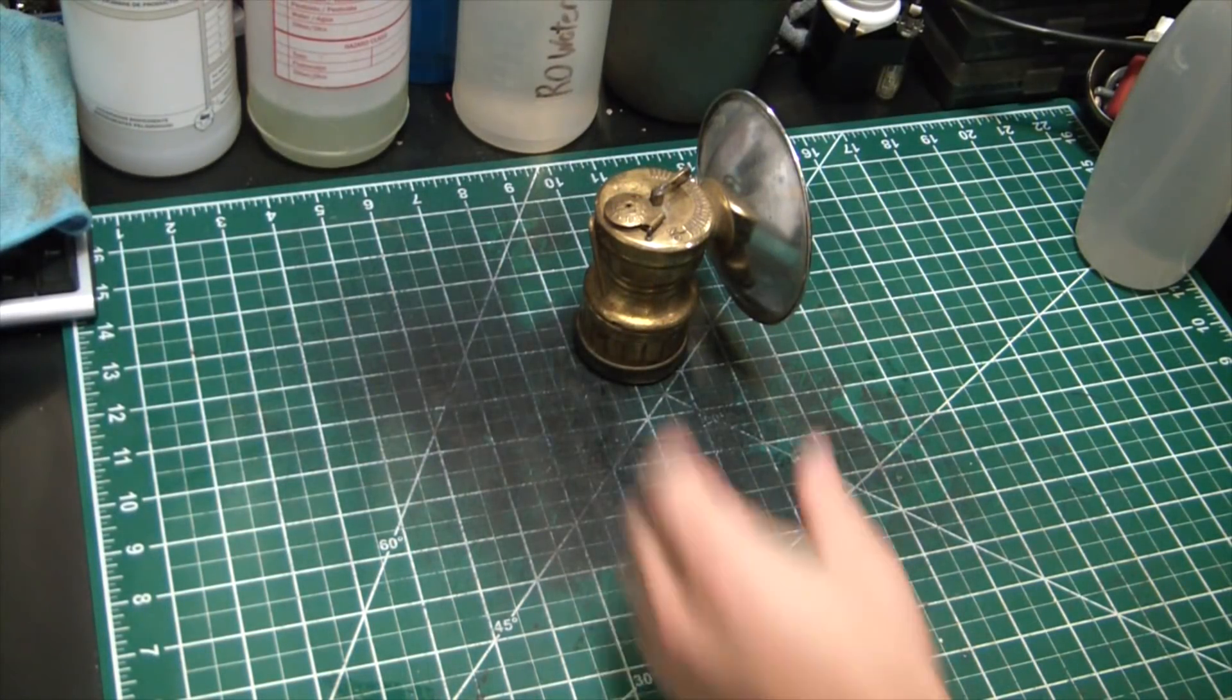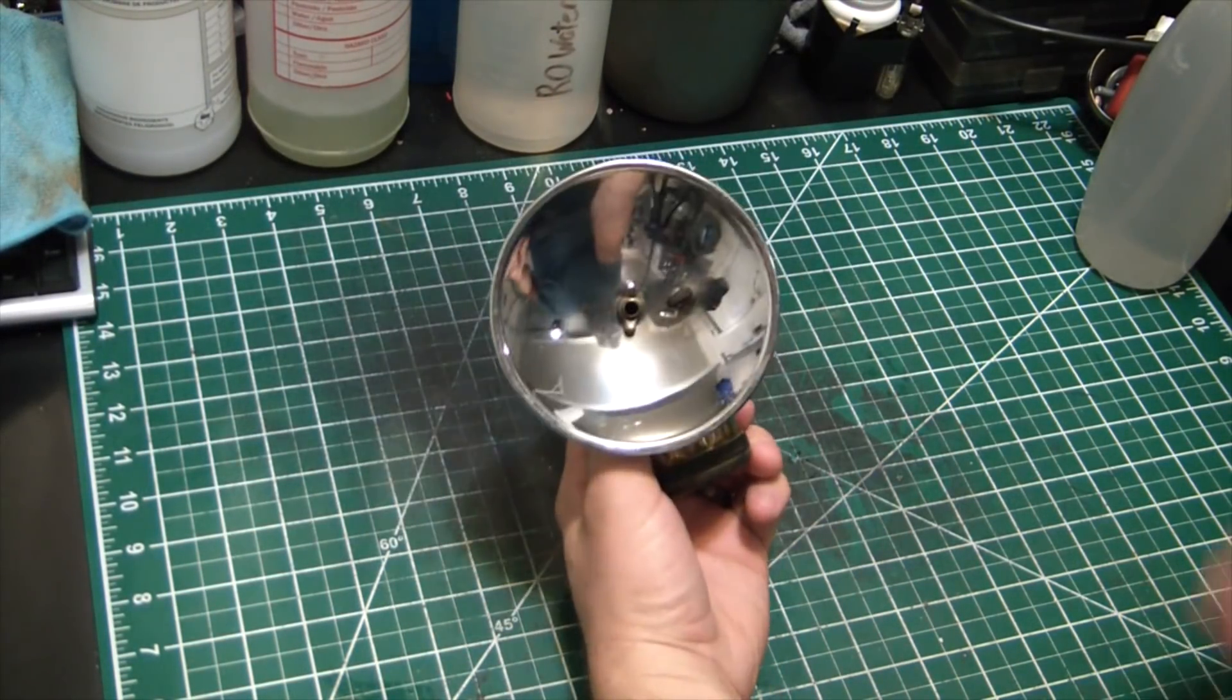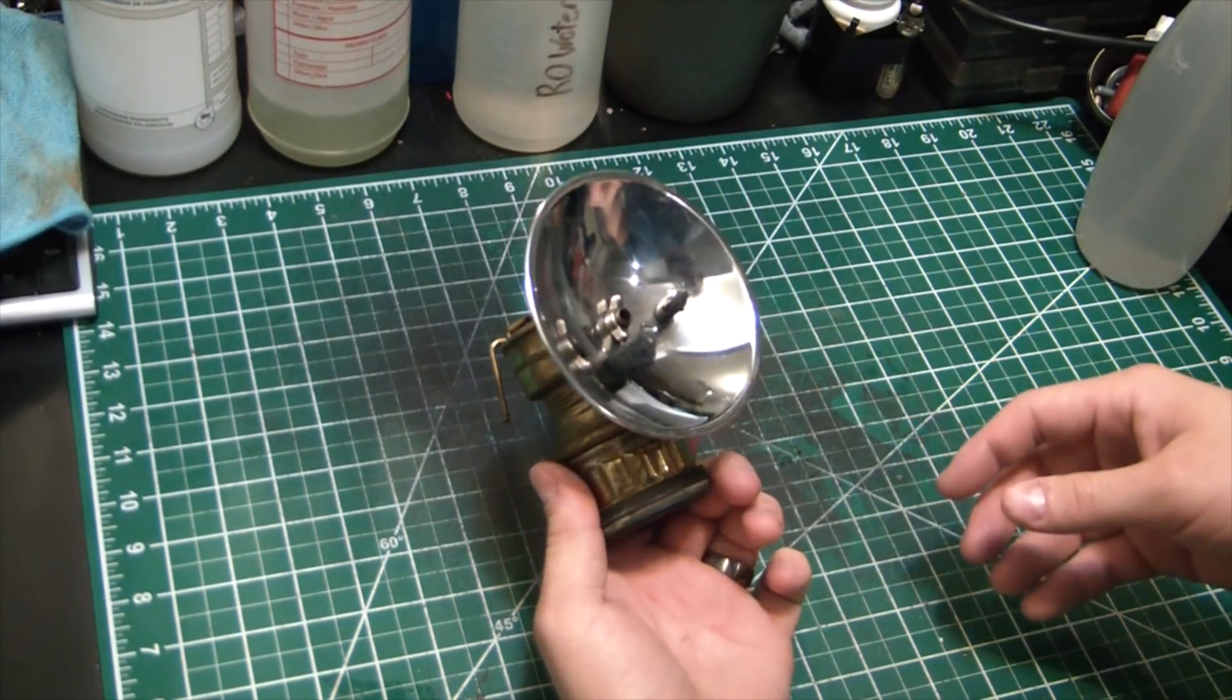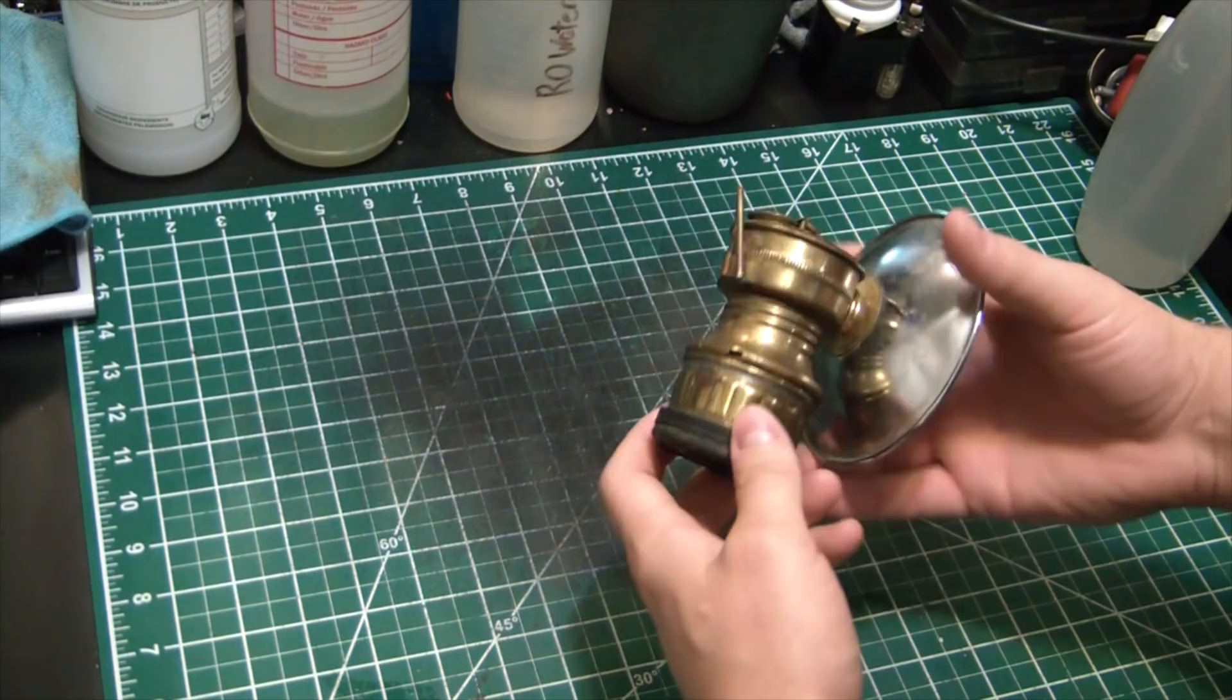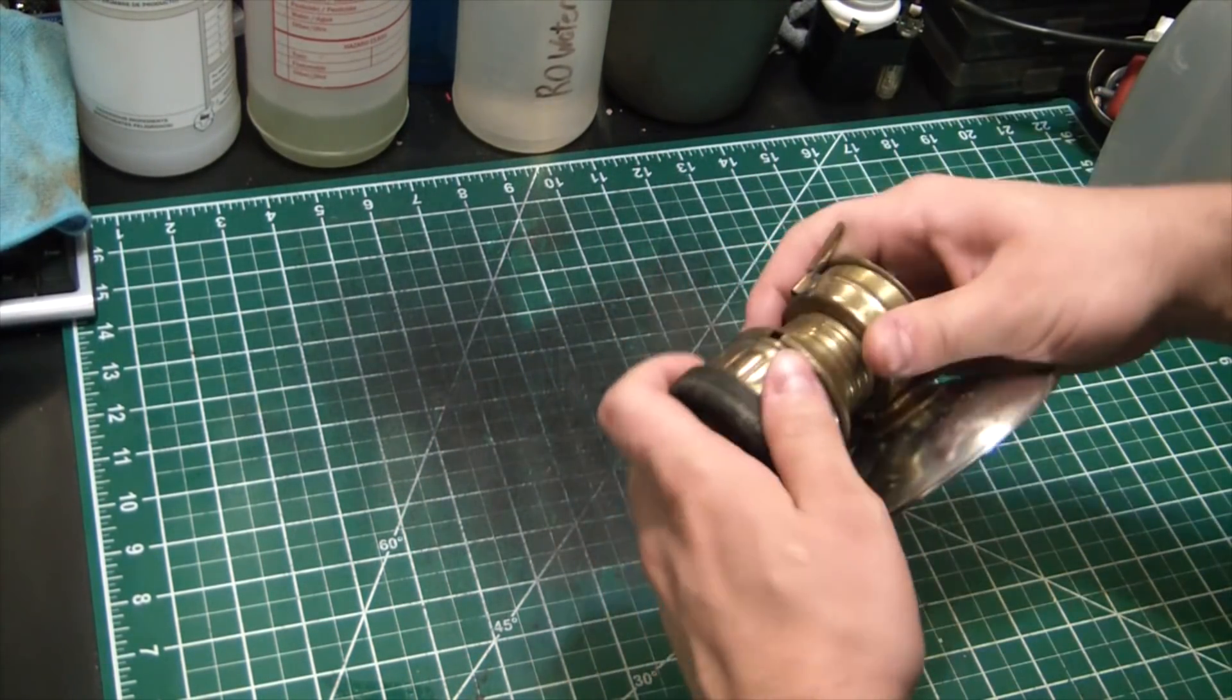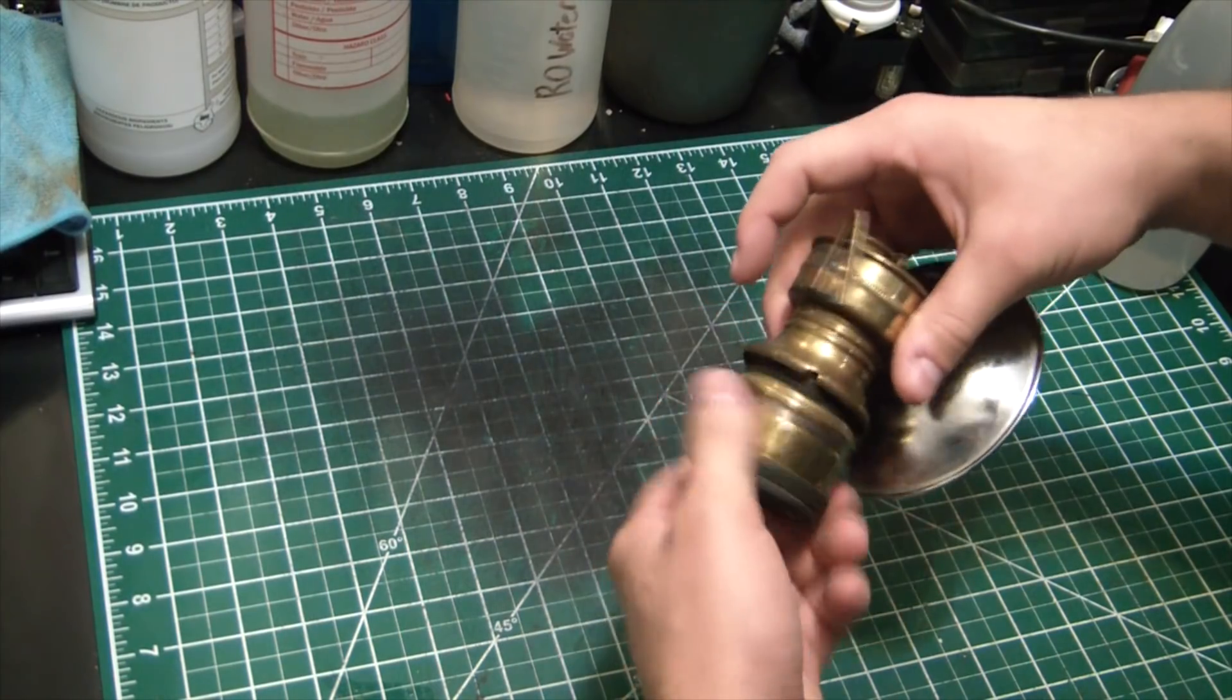Hey, what's going on guys? Welcome back to the Elemental Maker. Today I wanted to share with you this pretty cool piece of mining history found at a yard sale here. This is what they call a carbide lamp or lantern, and it's pretty interesting.